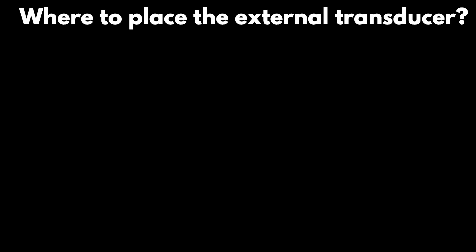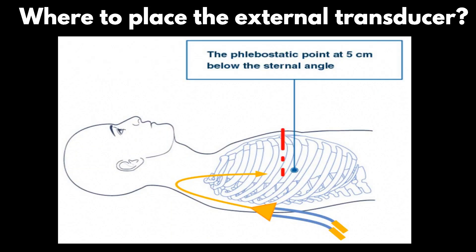Where to place the external transducer? It should be placed at a vertical distance of 5 centimeters below the sternal angle.